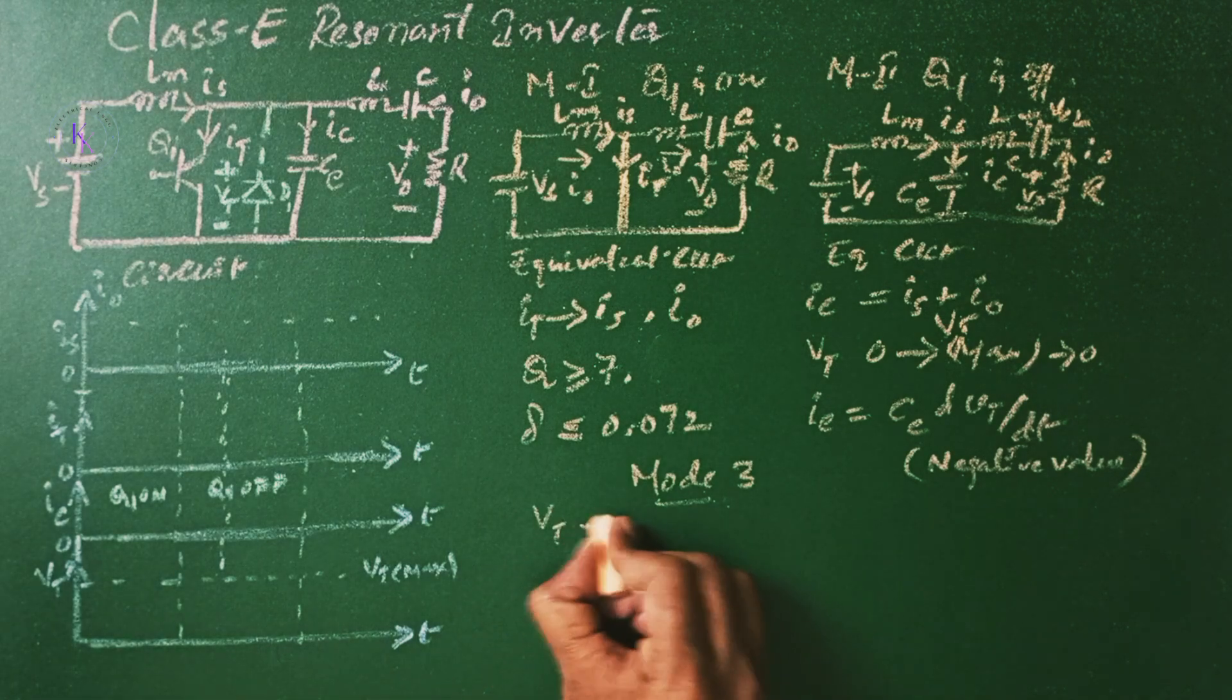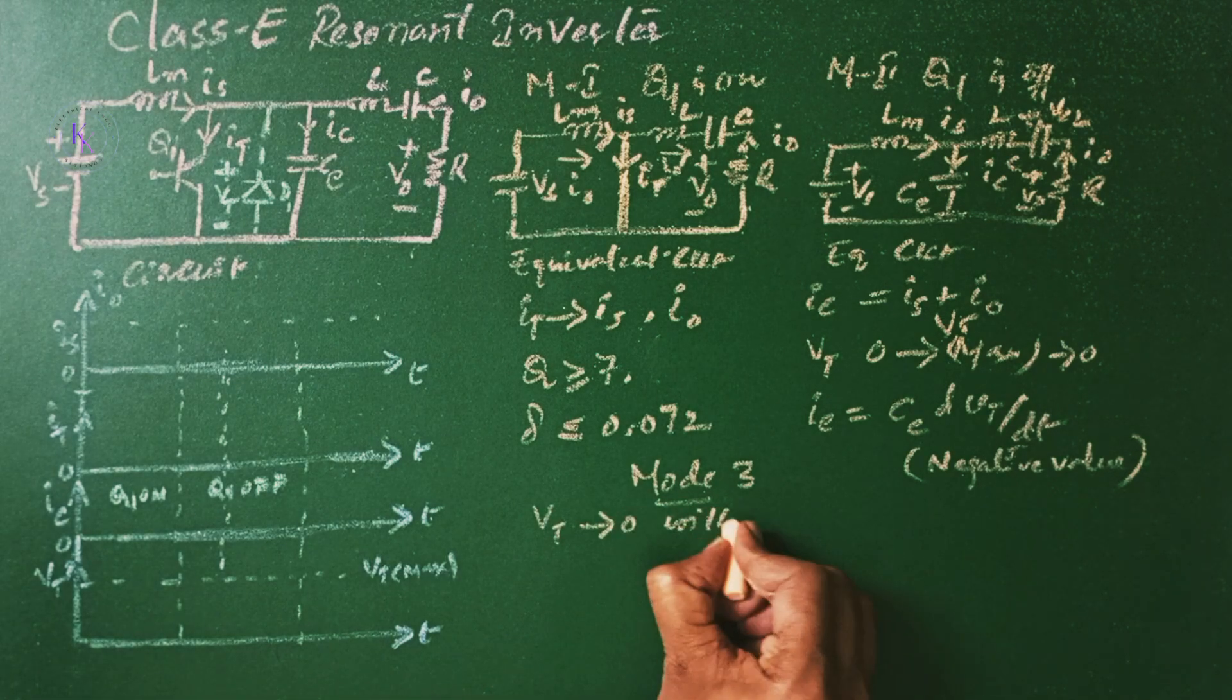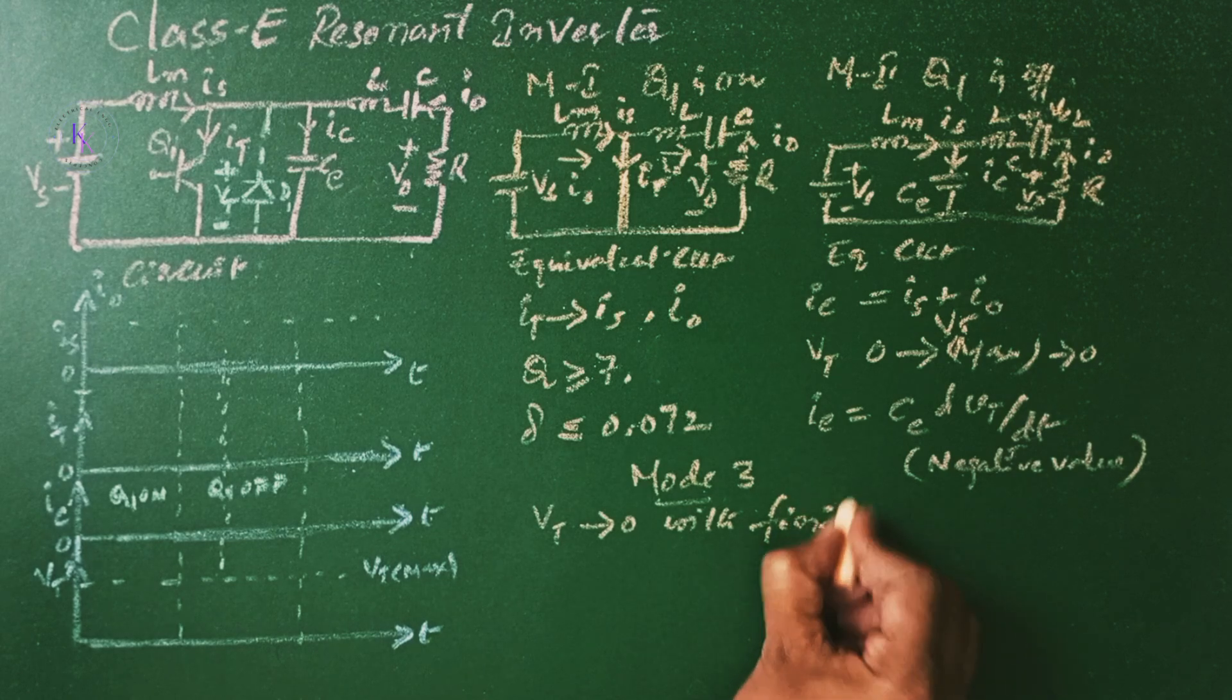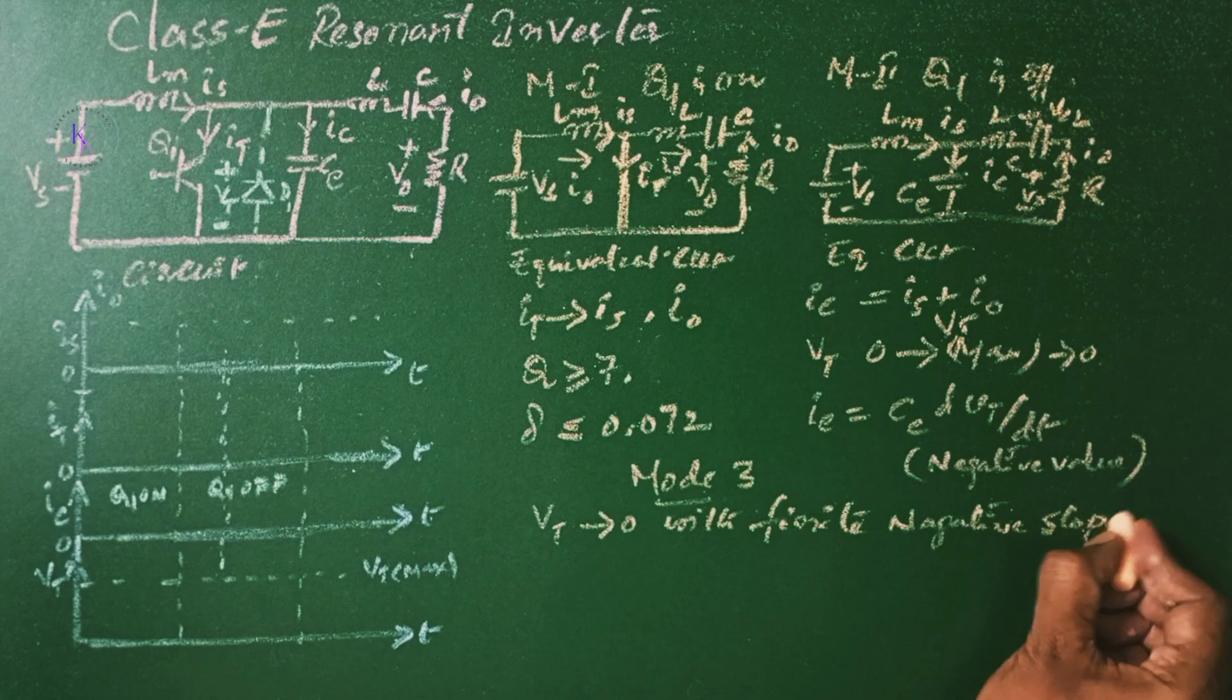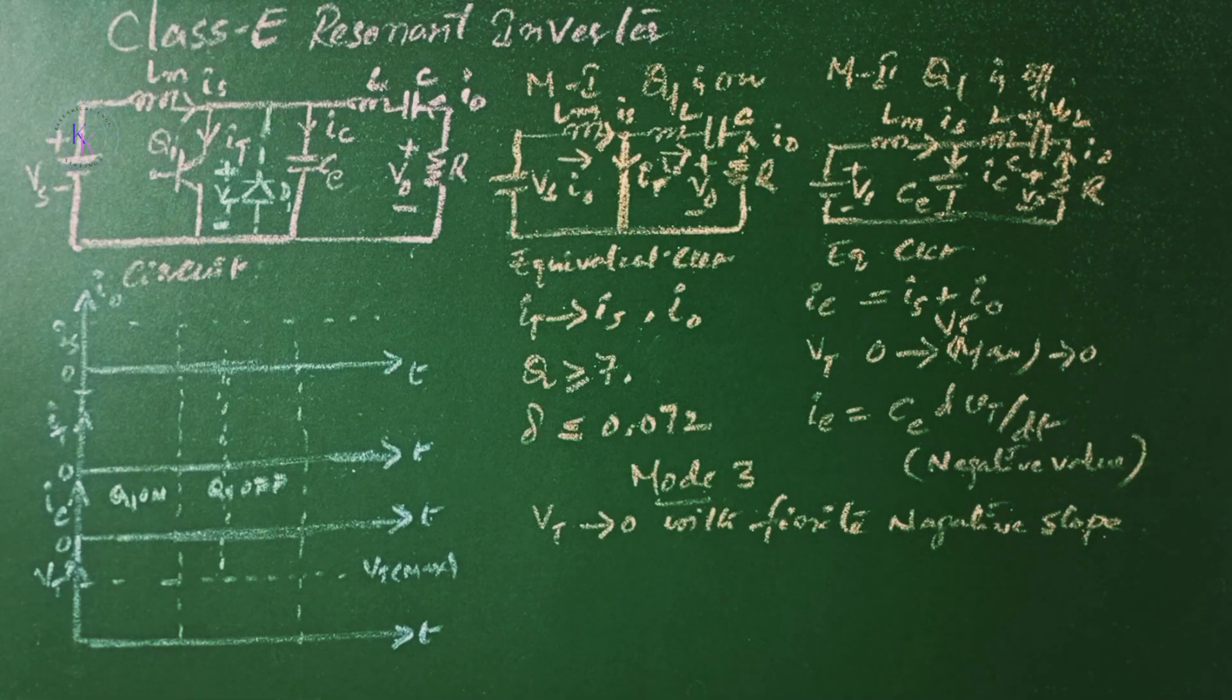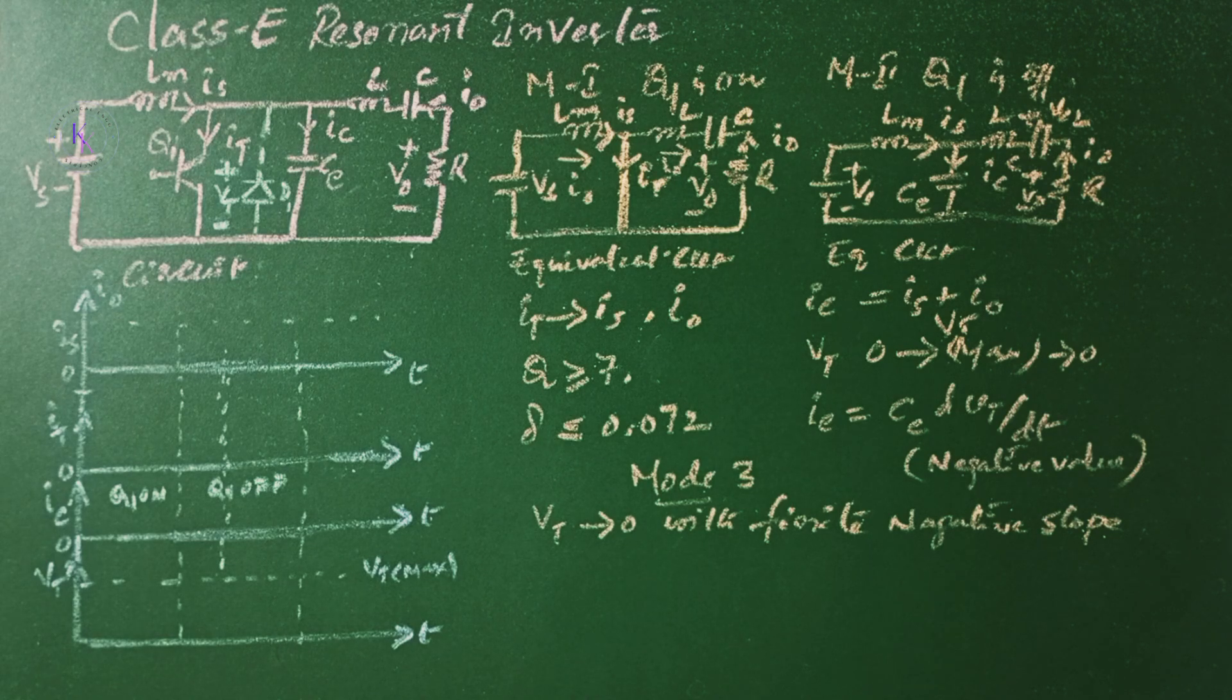So VT falls to 0 with a zero slope. The equivalent circuit is similar to Mode 1 except the initial conditions. The load current falls to 0 at the end of Mode 3.